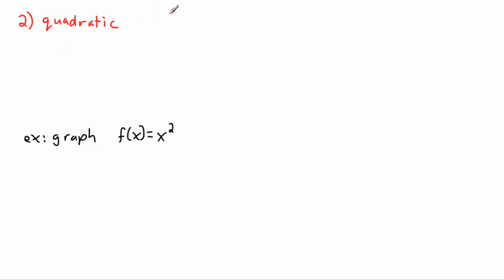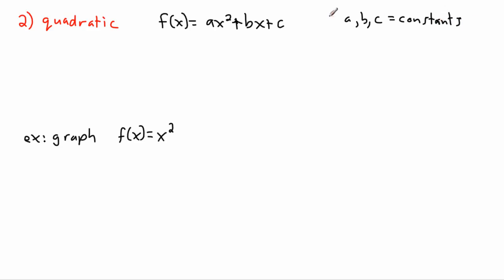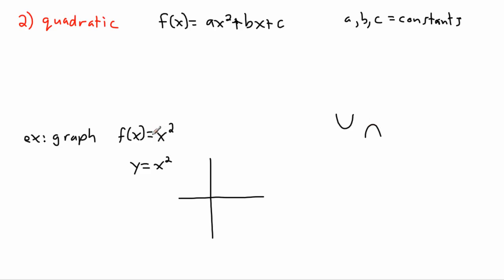Now for a quadratic function, the general form is f(x) = ax² + bx + c, where a, b, and c are just constants — they can be any numbers. If I want to graph f(x) = x², I just write y = x². This is a parabola. Because the coefficient of x² is positive, it opens upwards, passing exactly through the point (0, 0) and going up on both sides.